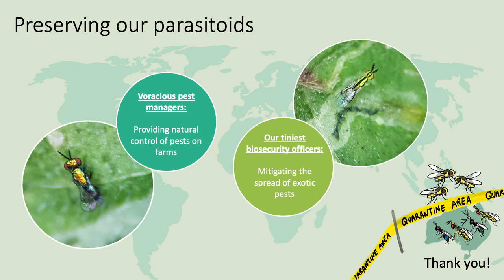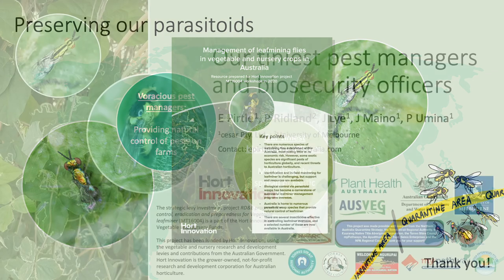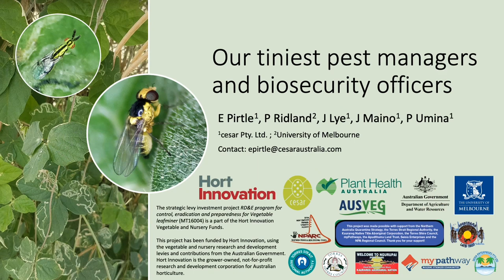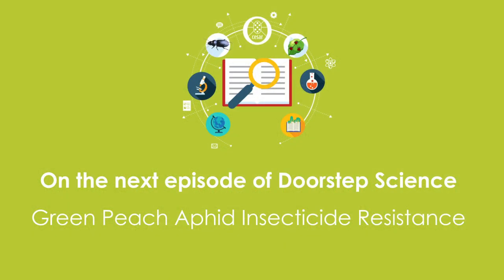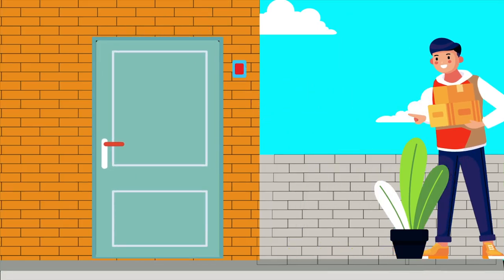If you would like to learn more about the natural control of leaf miner flies via parasitoid wasps, CESAR has developed a leaf miner management plan and you can find a link in the video description. Thanks for listening. This project is a Hort Innovation investment funded through the melons, vegetable, and nursery and gardens industry levies. CESAR would like to thank all project partners and supporters — you know who you are. Thanks for joining us today. On the next episode of Doorstep Science, we will be joined by Dr. Marielle Babineau, who will talk to us about insecticide resistance in the green peach aphid. Doorstep Science — it's our way of delivering good science straight to your door.